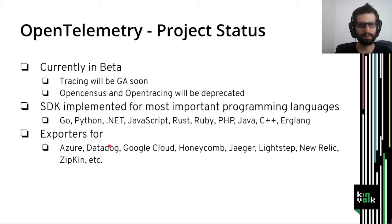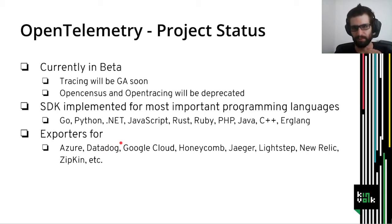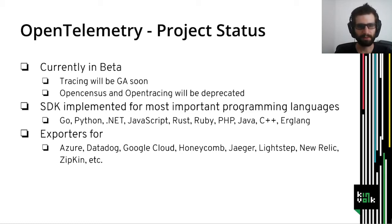What is the status of the OpenTelemetry project? It is currently in beta, and it should reach general availability by the end of the year. Once OpenTelemetry is GA, OpenCensus and OpenTracing will be deprecated with no new features. The SDK is implemented for most important programming languages, with some implementations being more mature than others. There are also exporters implemented for most of the vendors out there.